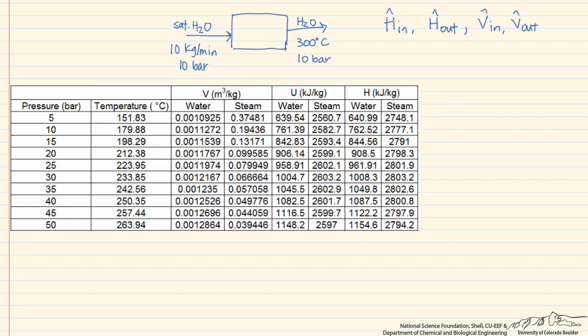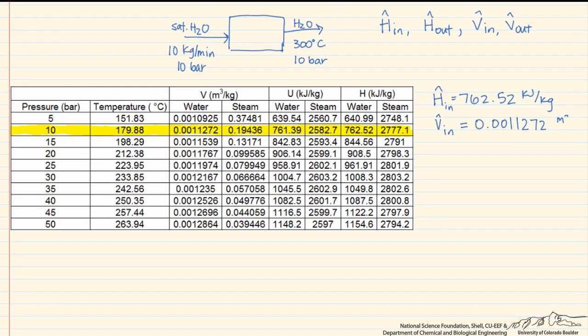Looking at saturated liquid at 10 bar, we note that the specific enthalpy of the saturated liquid — our specific enthalpy in — is equal to 762.52 kilojoules per kilogram. And our specific volume in is equal to 0.0011272 meters cubed per kilogram.